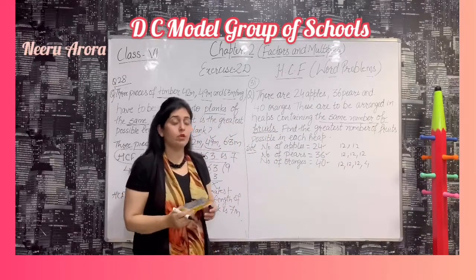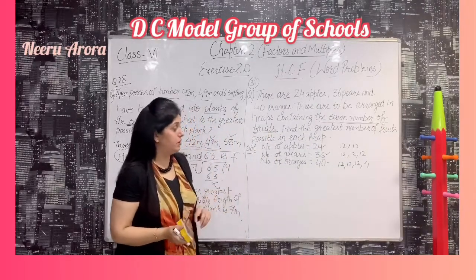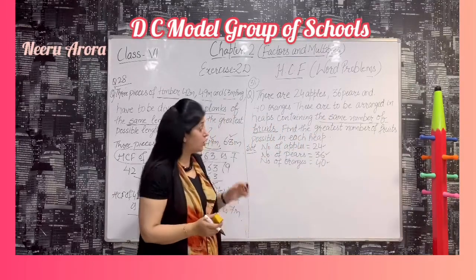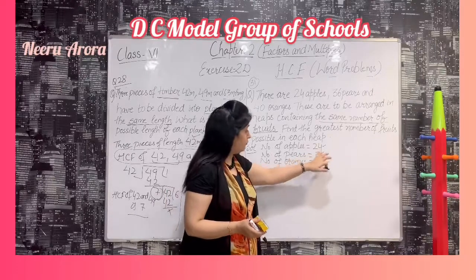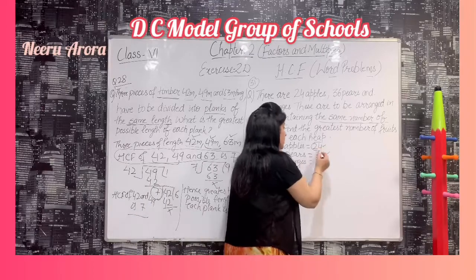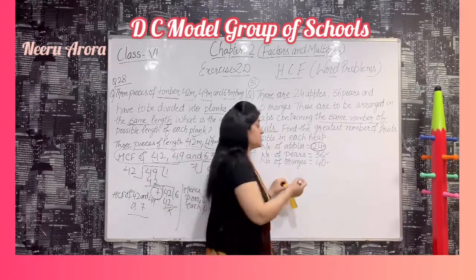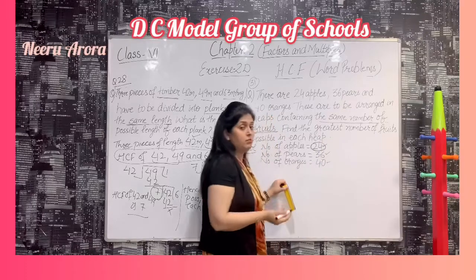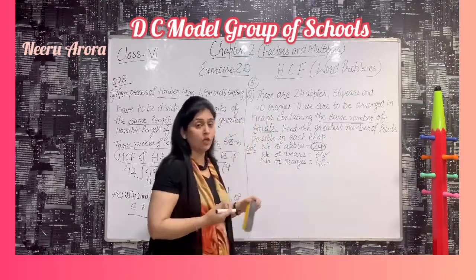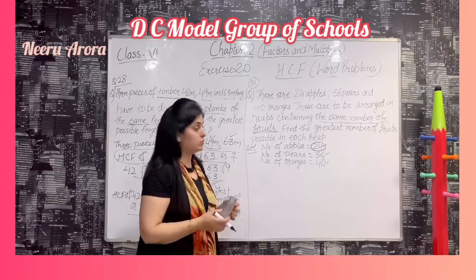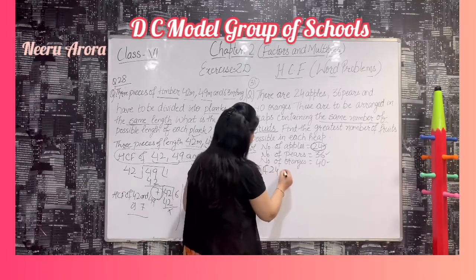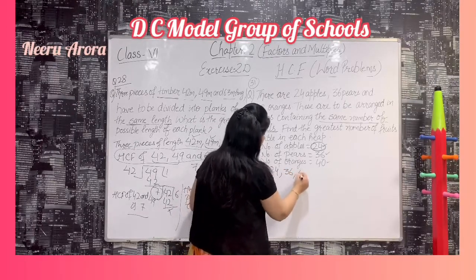So what we will do? We want a common factor which divides 24, 36, as well as 40. The number dividing 24 must be 24 or smaller than 24. When we want the greatest such smaller number, we find the HCF. So we will find HCF of 24, 36, and 40.